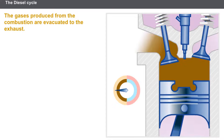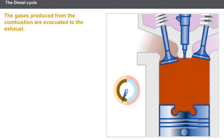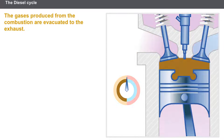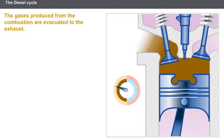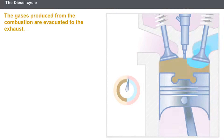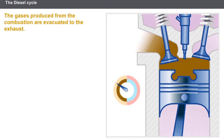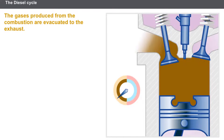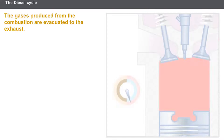During the exhaust phase, the exhaust valve is open and the piston rises again. The gases produced from the combustion are evacuated to the exhaust. The cycle can then start all over again.